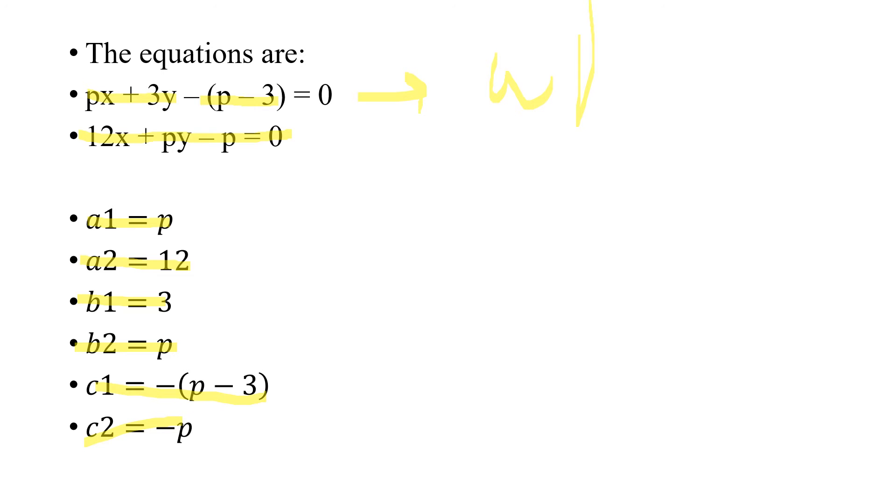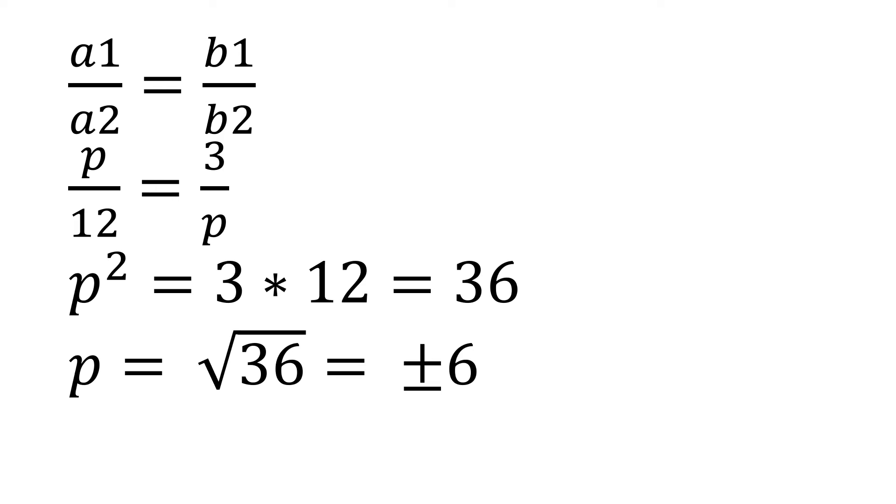Moving forward, we are first going to use a1/a2 equals b1/b2. Assigning the values of a1, a2, b1, and b2, we get p/12 = 3/p. From that we get p² = 36, so p = √36 which can be plus or minus 6.